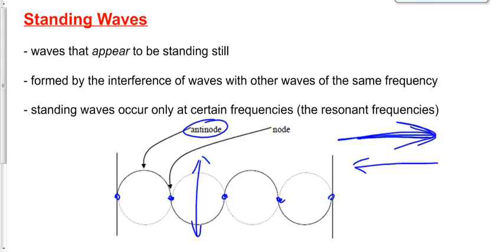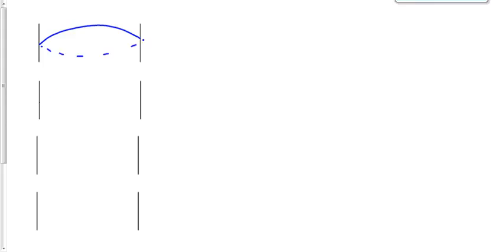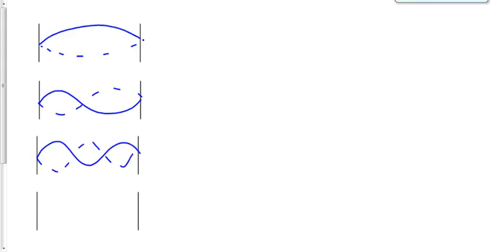What we see right here has four antinodes and five nodes — this would actually be the fifth harmonic. The first harmonic would look like this. The second one would look like this. The third one would look like this, and so on.